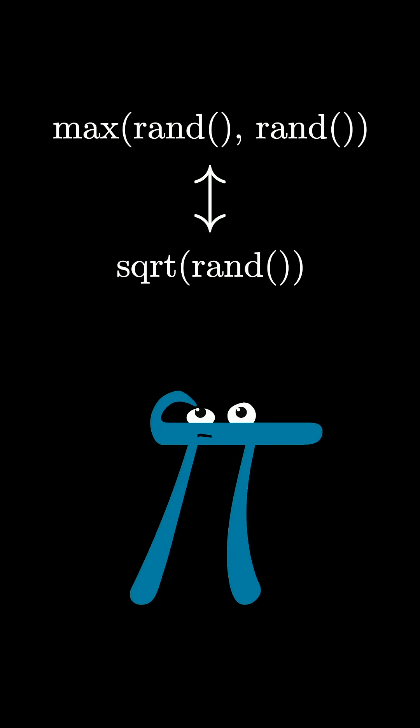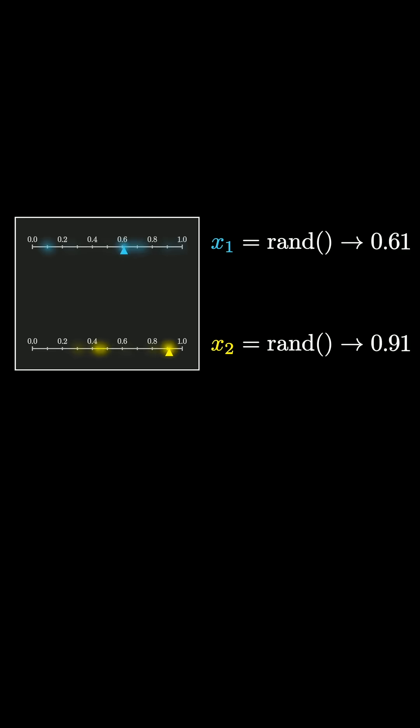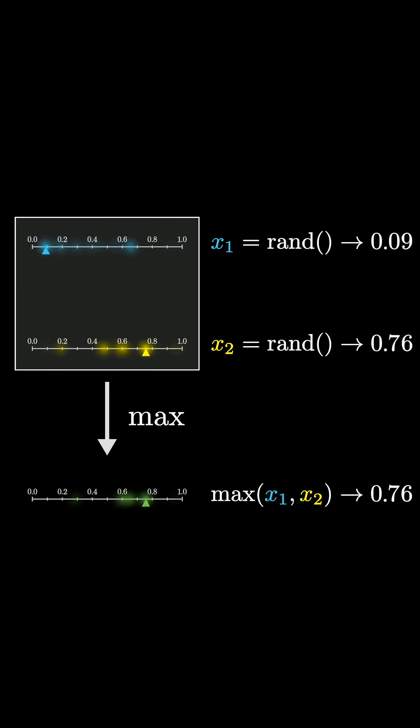Matt Parker recently showed me this fact that seems completely wild. Say you sample two random numbers, each one uniform in the range from 0 to 1, and you compute their maximum. Then the result is of course another random number, with this bias towards being larger.